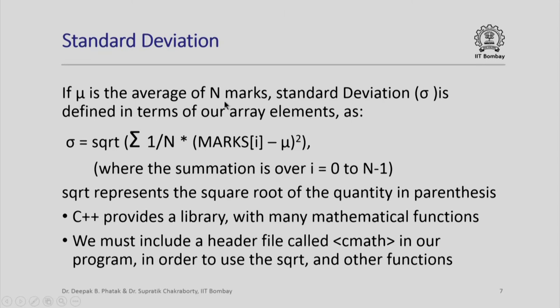We look at the definition of the standard deviation. So if mu is the average of n marks, the standard deviation sigma is given by this formula. Basically, you find out the difference of each mark from the average and square that difference. Sum it over for all the elements, divide by n, and you get the squared difference of which you take a square root. The square root represents the square root of the quantity in parenthesis.